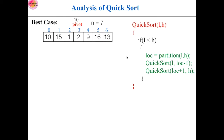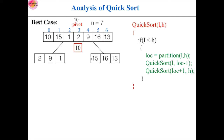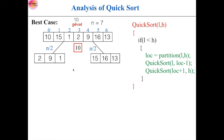Here, this partition algorithm will choose the first element as the pivot element and then return the correct position of that pivot element 10. If you apply the partition algorithm by selecting 10 as the pivot element, then index 3 is the proper place for 10. The elements smaller than 10 will be in the left sub-array and elements greater than 10 will be in the right sub-array. The array size is reduced from n to n/2 in both left and right sub-arrays.